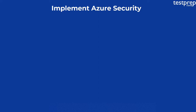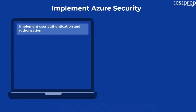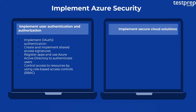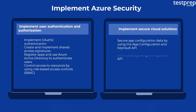Third, Implement Azure Security. Number one: Implement user authentication and authorization. It contains four subtopics: First, implement OAuth 2 authentication. Second, create and implement shared access signatures. Third, register apps and use Azure Active Directory to authenticate users. Fourth, control access to resources by using role-based access controls. Number two: Implement secure cloud solutions. It contains four subtopics: First, secure app configuration data by using the app configuration and Key Vault API. Second, manage keys, secrets, and certificates by using the Key Vault API. Third, implement managed identities for Azure resources.